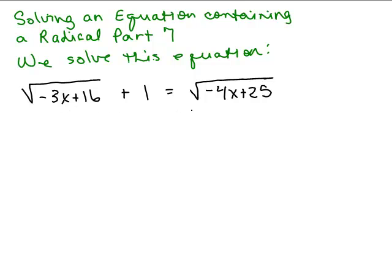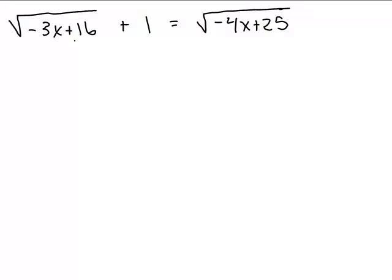Notice in this equation which we're going to be solving, there are two radicals. The technique will be to isolate one radical on one side of the equation and square both sides to get started. It doesn't matter which one we isolate — the right side is already isolated, or you could subtract one from both sides. Let's go ahead and leave it as it is.